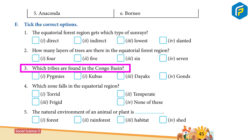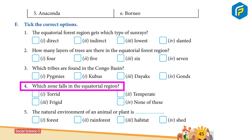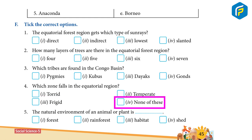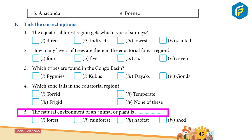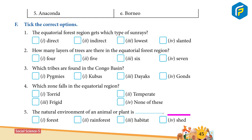3) Which tribes are found in the Congo Basin? 1-Pygmies, 2-Khabus, 3-Dictators. 4) Which zone falls in the Equatorial Region? 1-Torrid, 2-Temperate, 3-Frigid, 4-None of these. 5) The natural environment of an animal or plant is called __: 1-Forests, 2-Rainforests, 3-Habitat, 4-Shed.